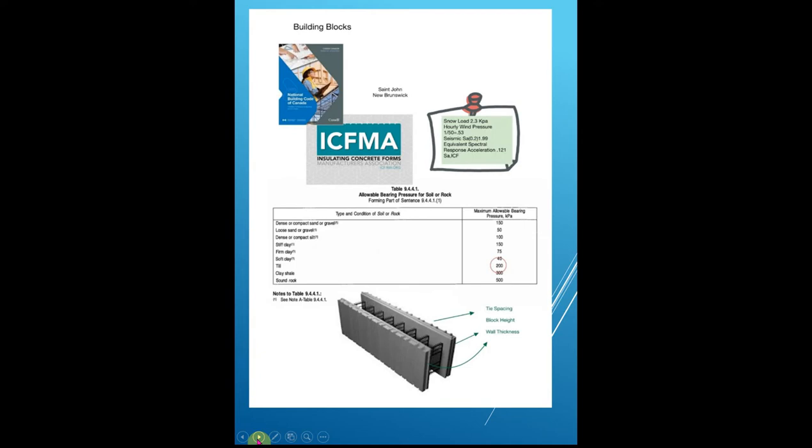A couple of things you're going to need to know: you'll need the building blocks, and you'll need some climatic data — a snow load, wind pressure, seismic equivalent, and spectral response acceleration. That comes out of the ICFMA manual. You'll need to know those as you apply the various tables and charts. When you're doing an ICF design, you'll need a varying pressure, tie spacing, block height, because the blocks would vary from manufacturer to manufacturer, and the bearing pressure would depend on the soil.